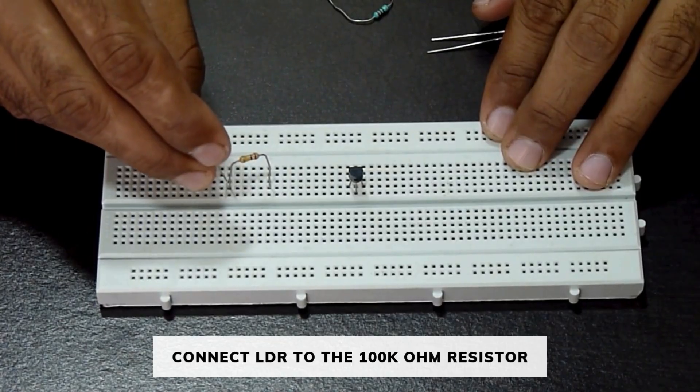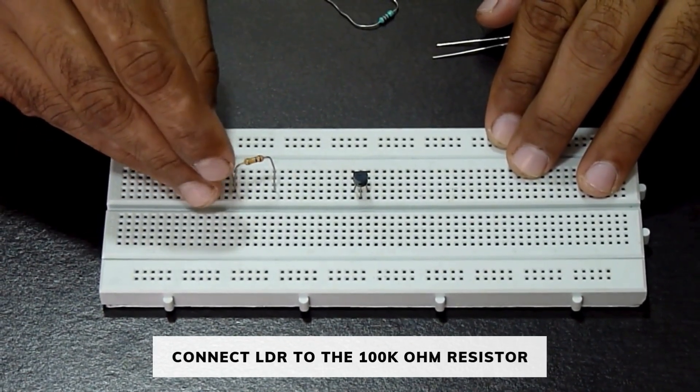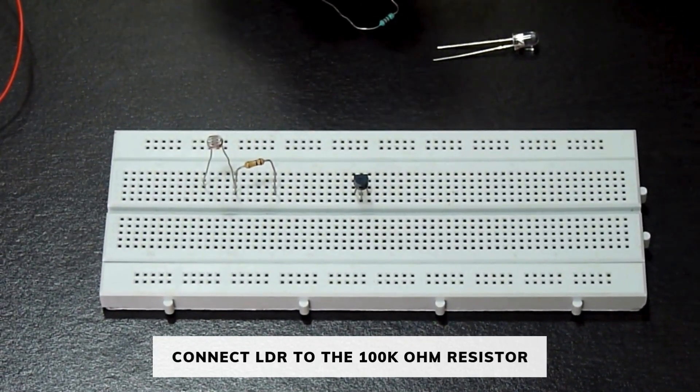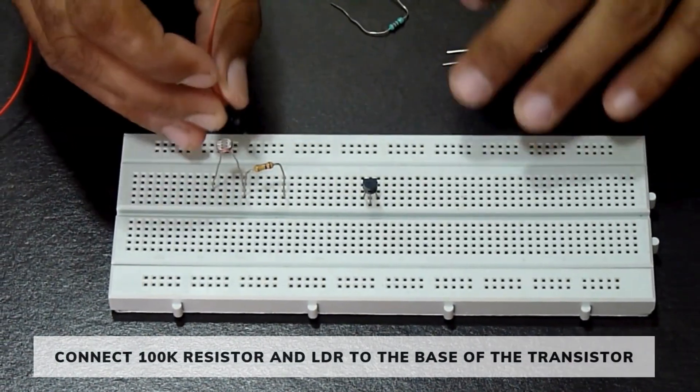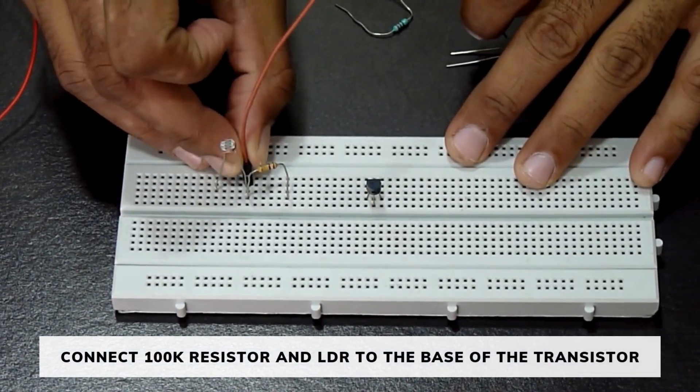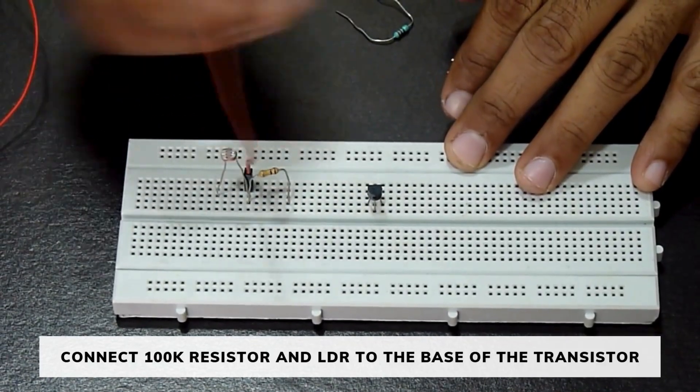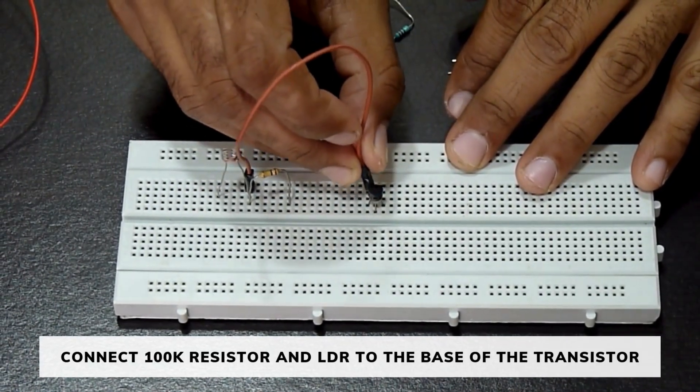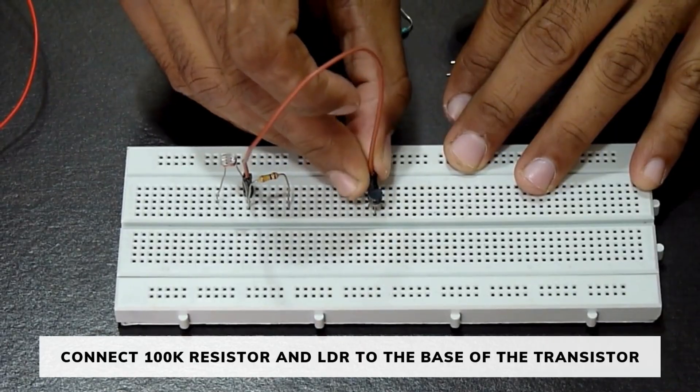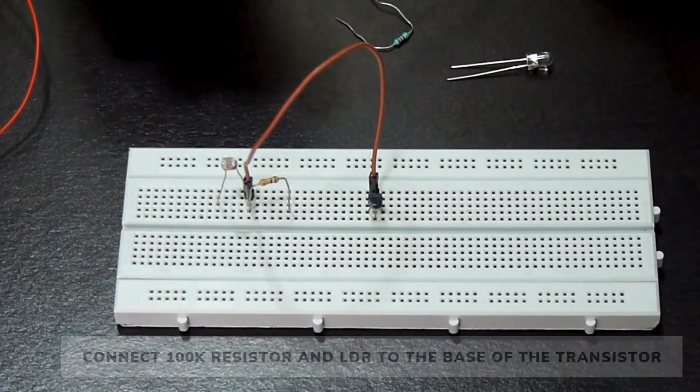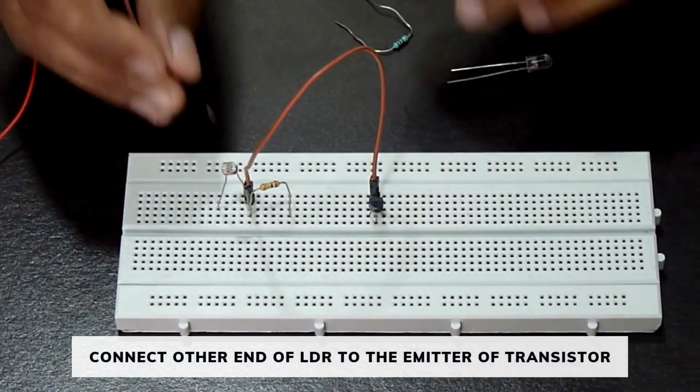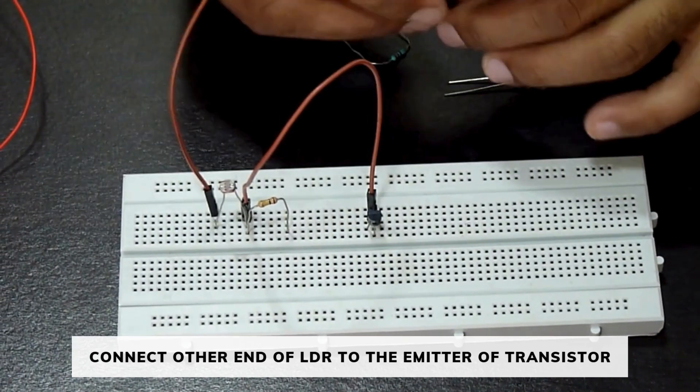Now, we will connect the LDR to the 100 kilohm resistor. Connect the 100 kilohm resistor and LDR to the base terminal of the transistor. Connect the other end of the LDR to the emitter terminal of the transistor.